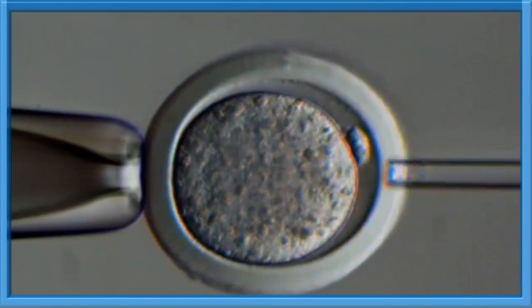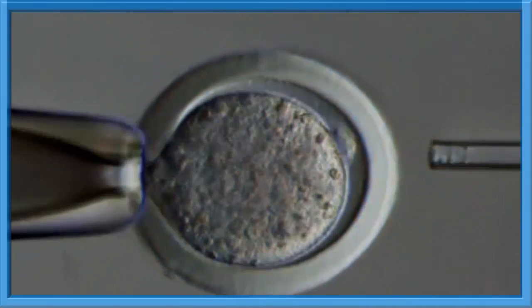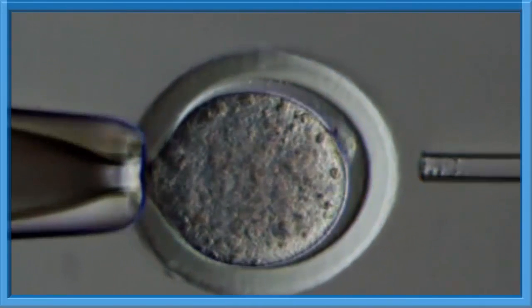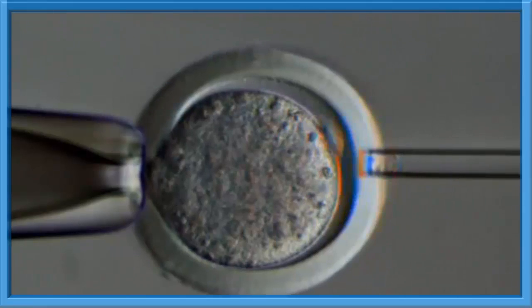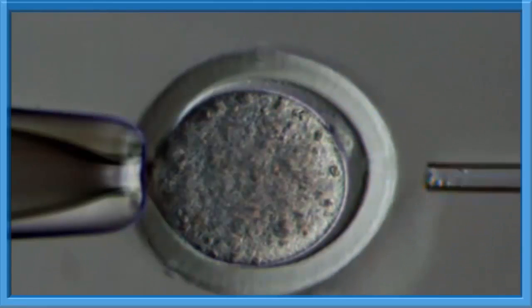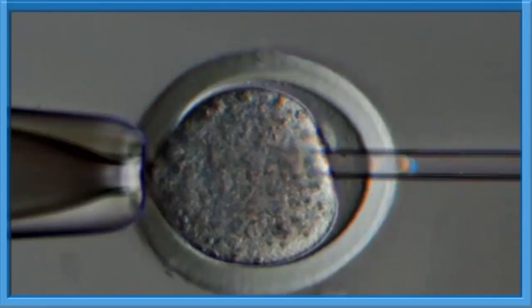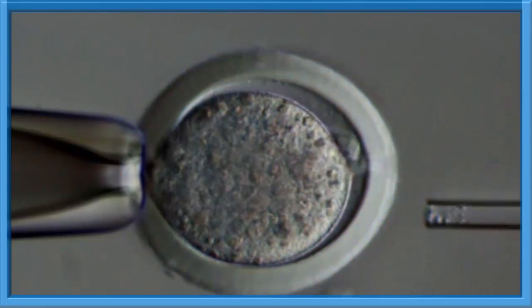Somatic cell nuclear transfer is a laboratory strategy for creating a viable embryo from a body cell and an egg cell. The technique consists of taking an enucleated oocyte and implanting a donor nucleus from a somatic cell.